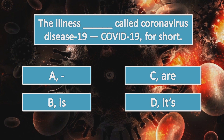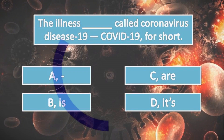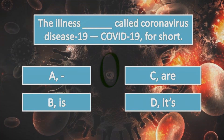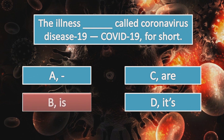And let's see the question. The illness called coronavirus disease 19, COVID-19 for short. What is the missing word? The correct answer is B, is. The illness is called COVID-19.